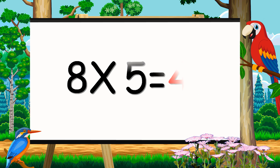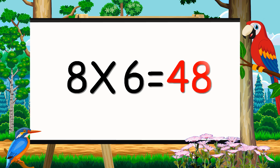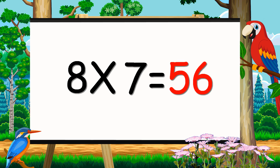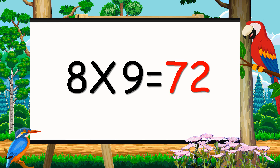8 fives are 40. 8 sixes are 48. 8 sevens are 56. 8 eights are 64. 8 nines are 72.